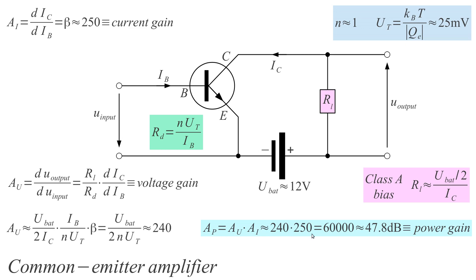The output impedance of this amplifier is very close to the input impedance of the next amplifier stage — excellent for cascading. All present-day transistors provide the highest gain in the common emitter configuration. This is especially important at high frequencies, because at high frequencies transistors provide little gain due to many side effects. So the common emitter amplifier is the amplifier of choice for high frequencies to make the best use out of the transistors.